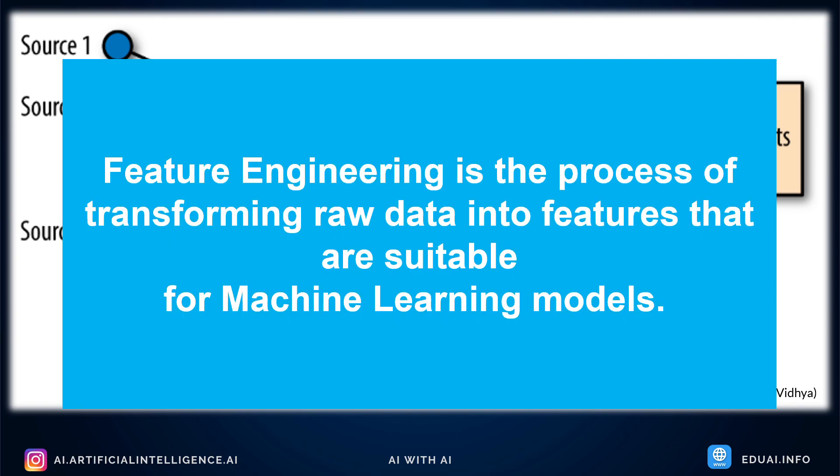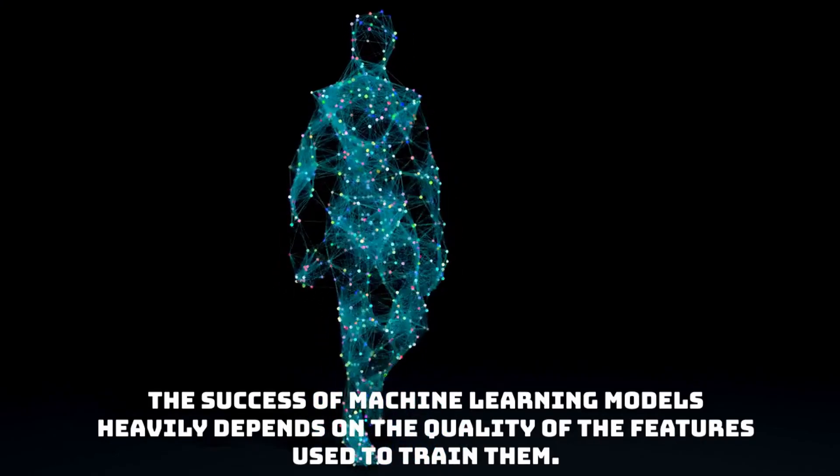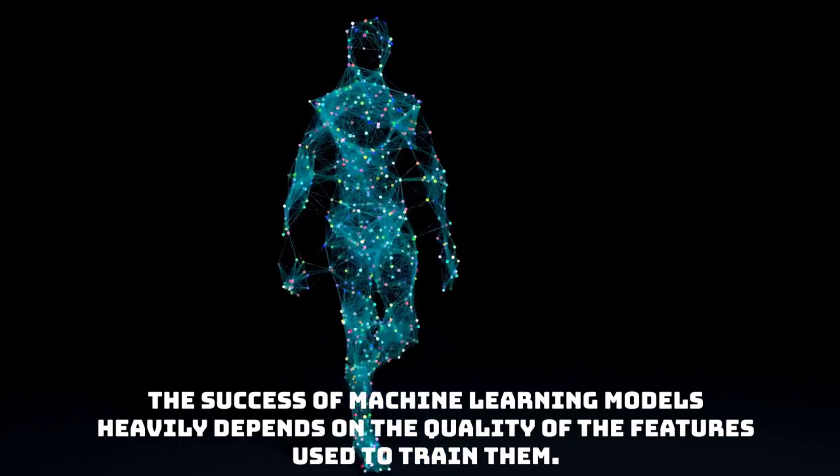Feature engineering is the process of transforming raw data into features that are suitable for machine learning models. In other words, it's a process of selecting, extracting, and transforming the most relevant features from available data to build more accurate and efficient machine learning models. The success of a machine learning model heavily depends on the quality of the features used to train them.